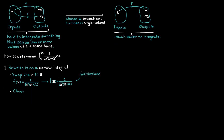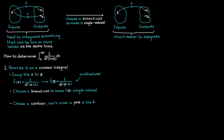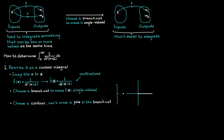So the next thing we will have to do is to choose a branch cut to make our function f single-valued. And after that, the last thing we have to do to create our contour integral is to choose a contour. The important things here are that the contour cannot cross a pole, a singularity in this case, or the branch cut that you have chosen. In this case, we can let the branch cut go along the real axis.